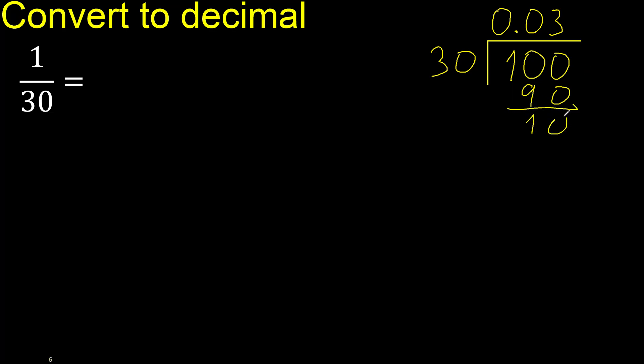Subtract. There is no number, therefore complete with 0. 100. 30 multiplied by 3 is 90.